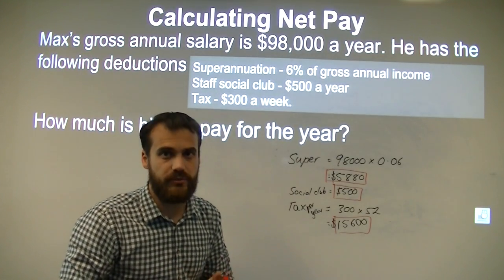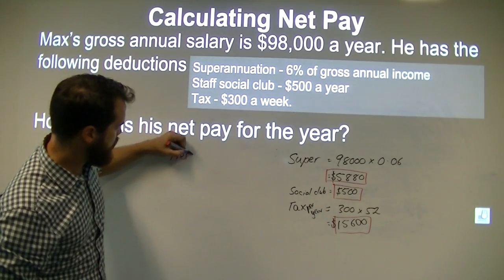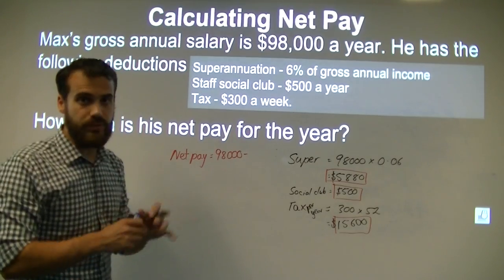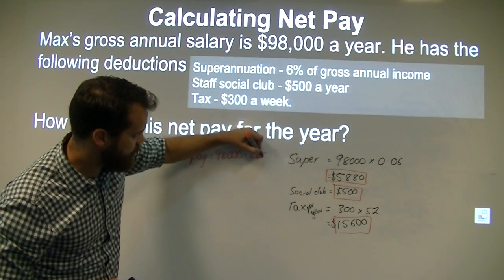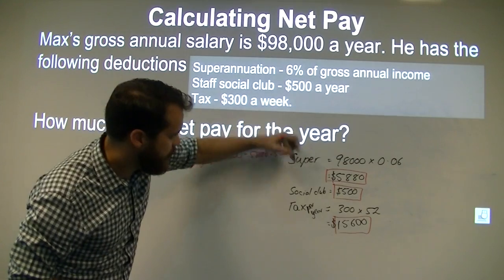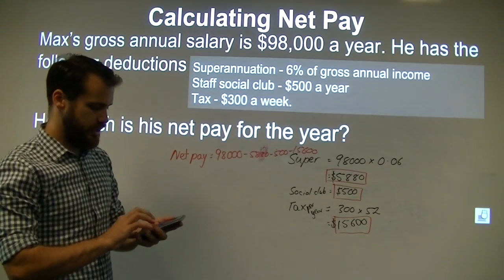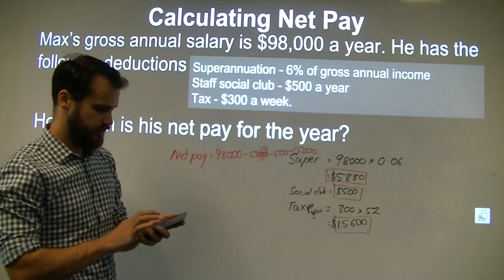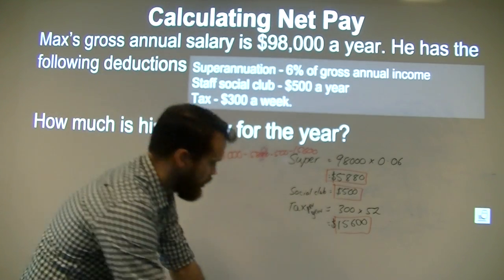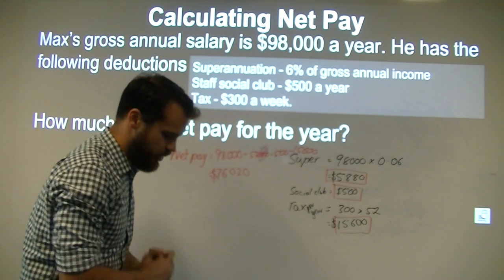Now that we have all that information, we can find out how much this person's net pay is. This person's net pay is equal to $98,000 minus all of those deductions: minus $5,880, minus $500, and minus the tax, $15,600. Put all of that into your calculator and you get an answer of $76,020. That's our final answer.